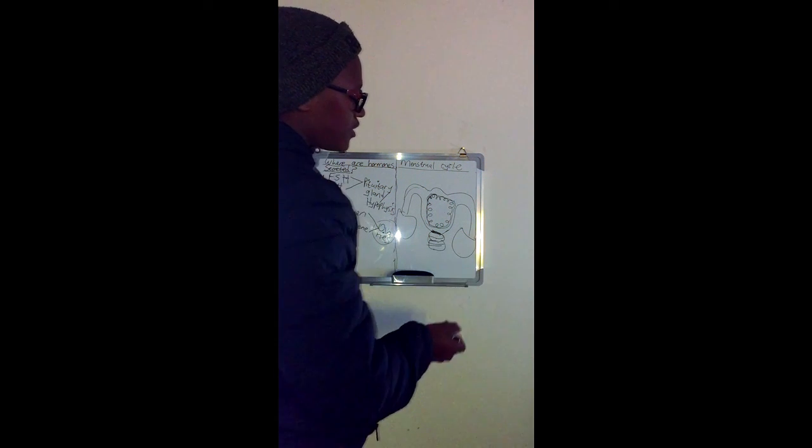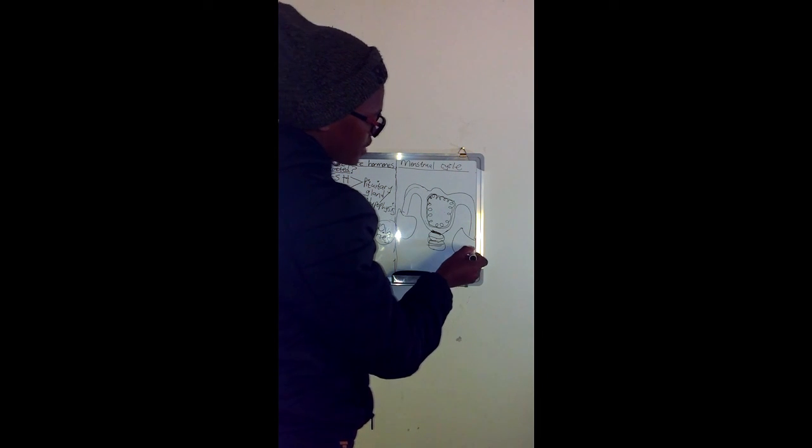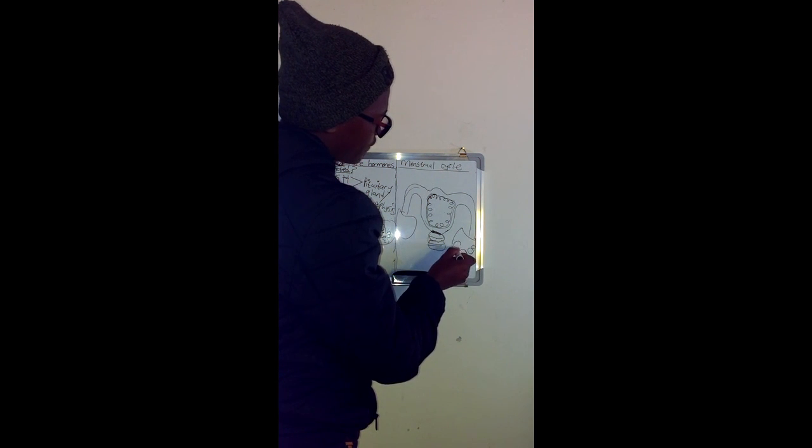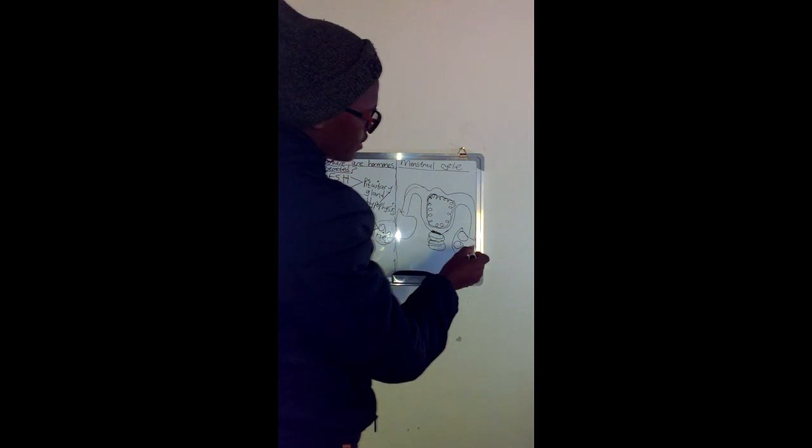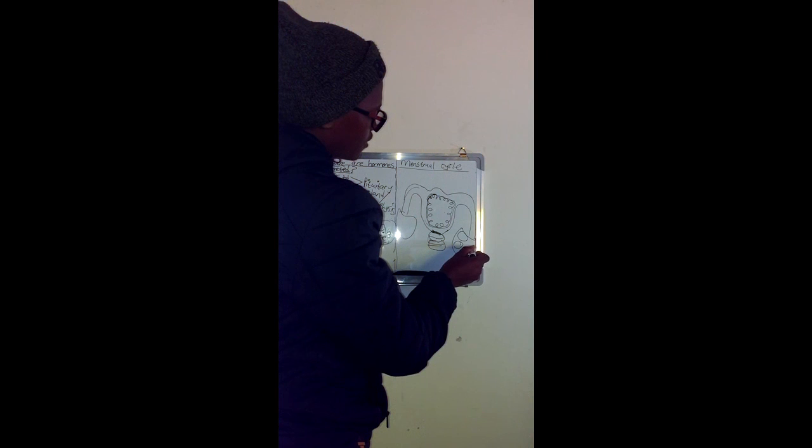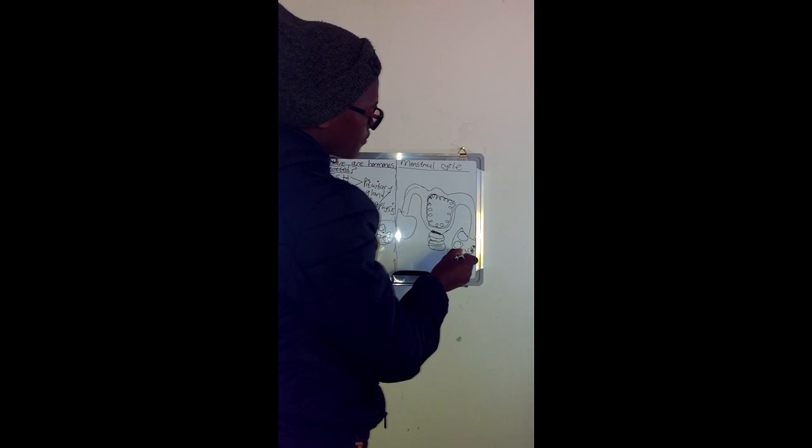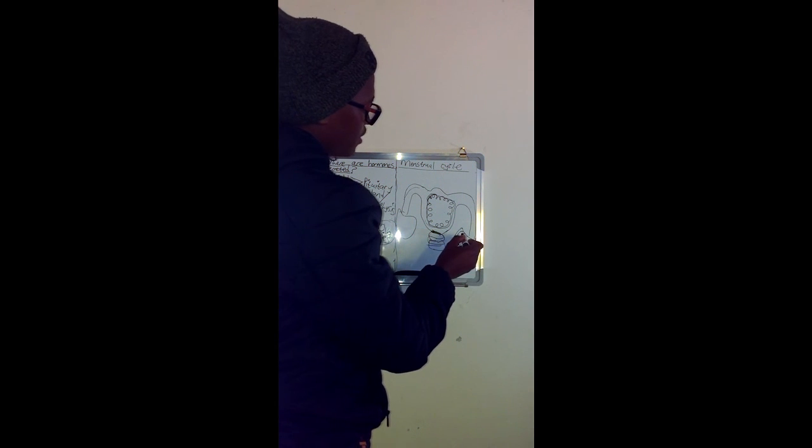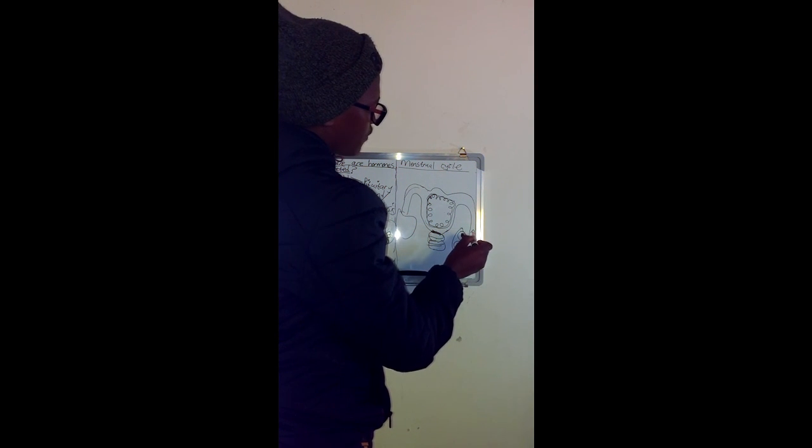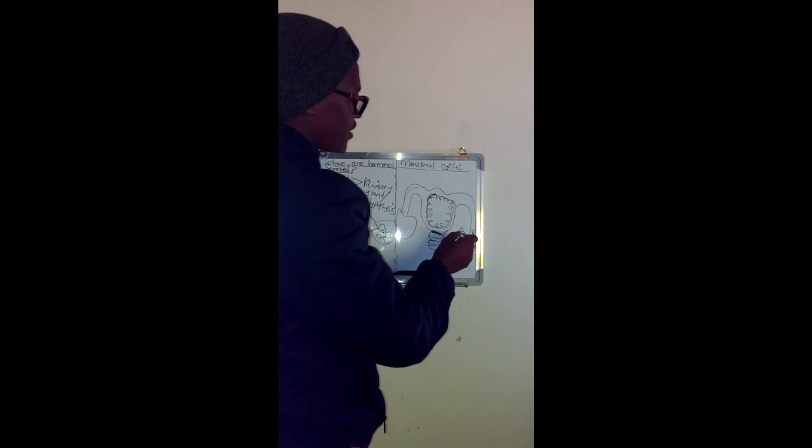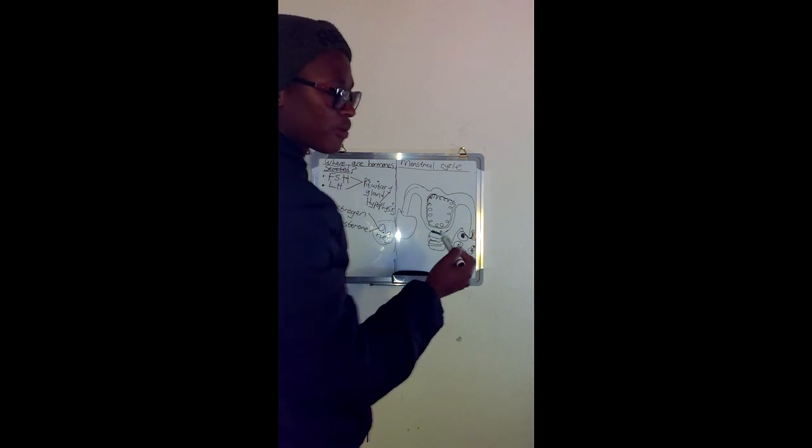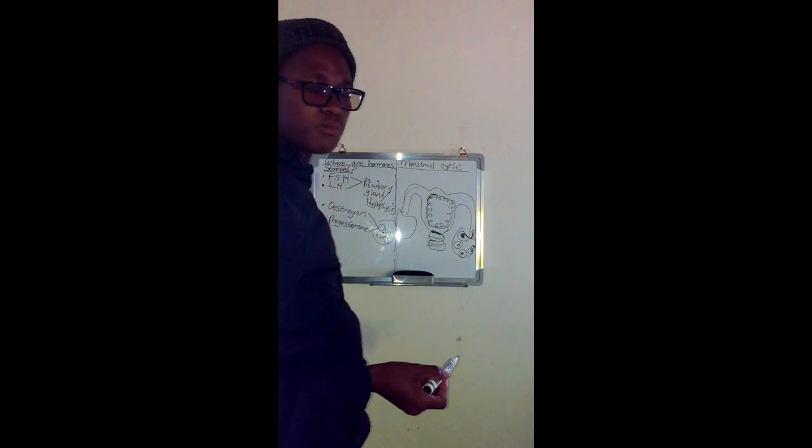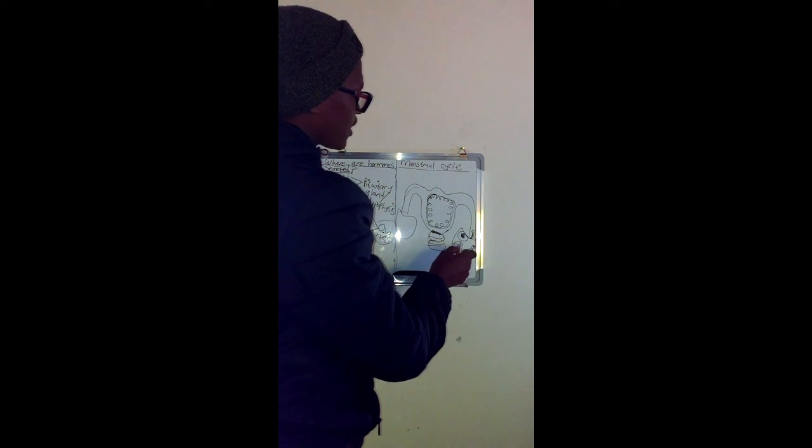Let me discuss the follicles and their development. Inside the ovaries, we have follicles at different stages of development. Inside each and every follicle, we have an egg or an ovum. Once this ovum is fully developed, it is released into the fallopian tube by the process we call ovulation. Ovulation is the process whereby an ovum or egg is released from the ovaries into the fallopian tube.